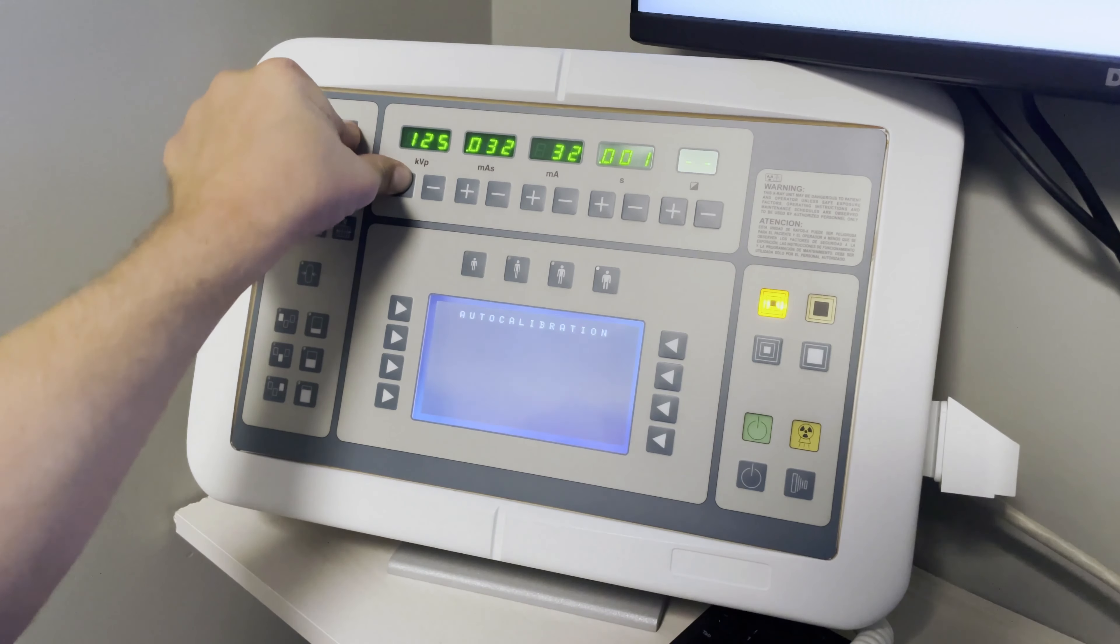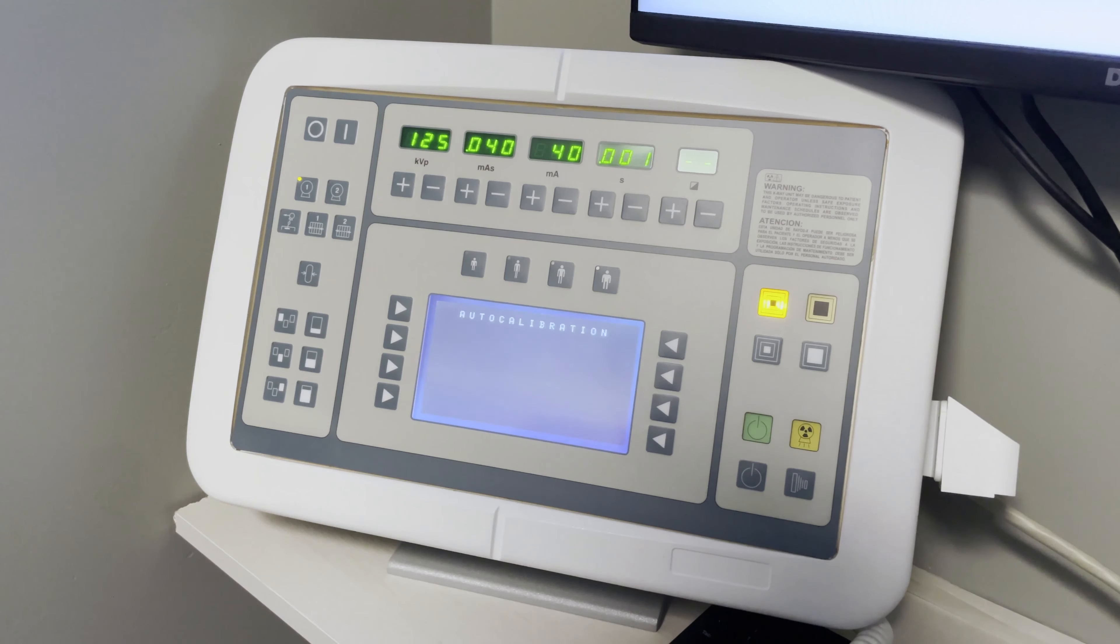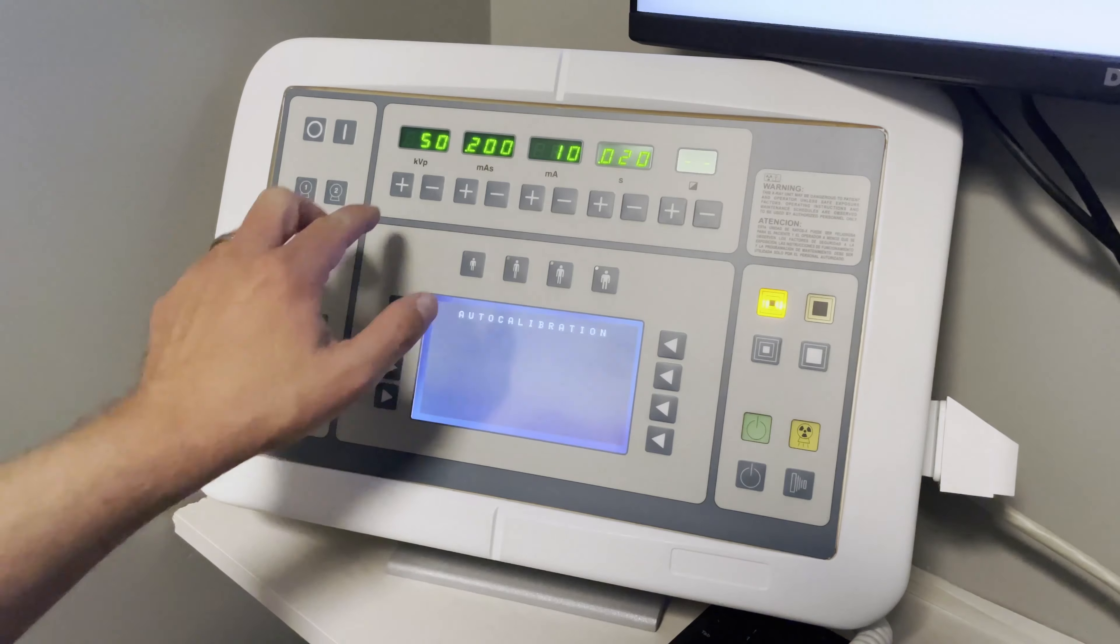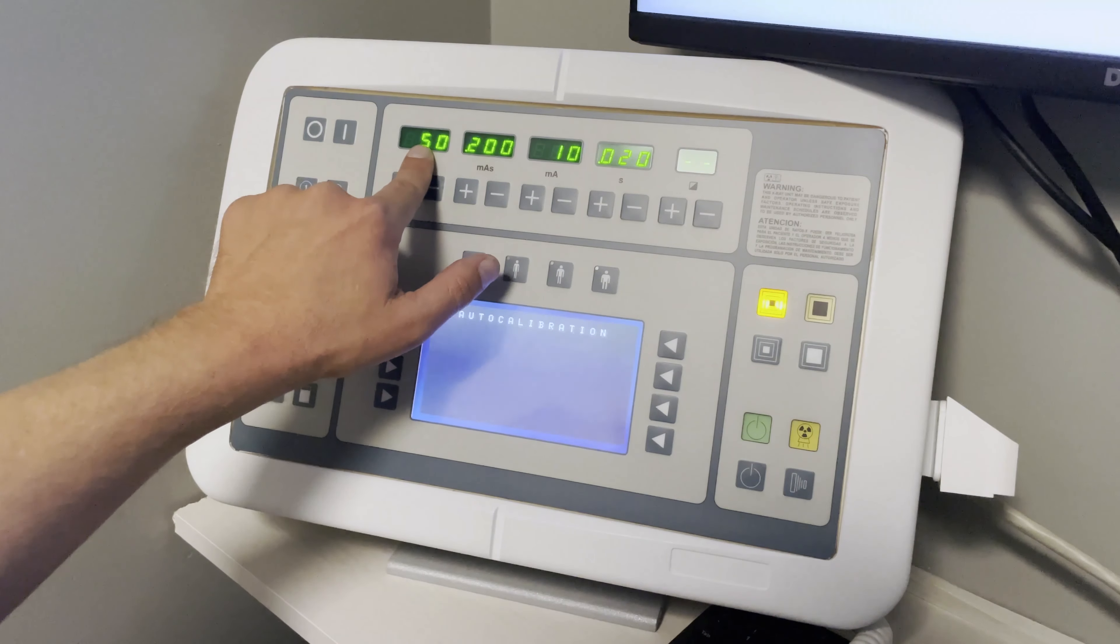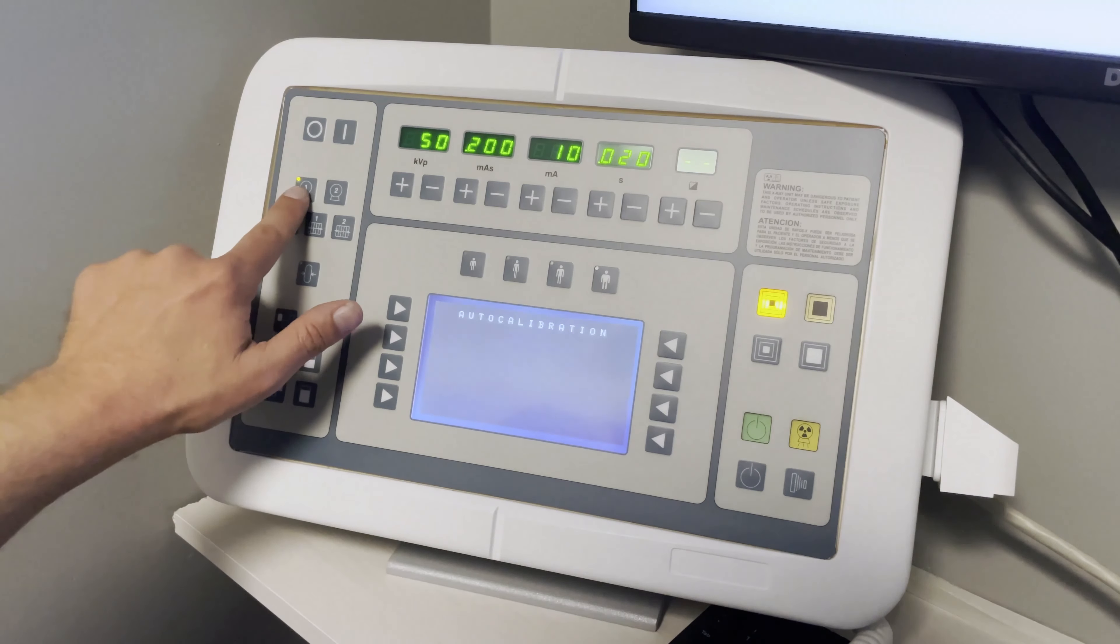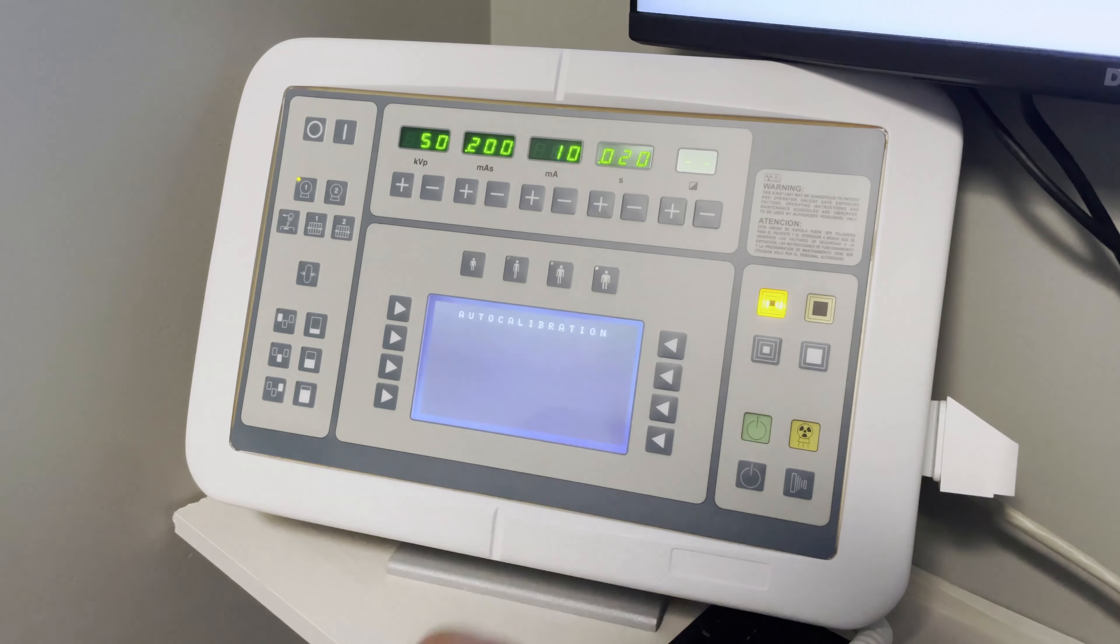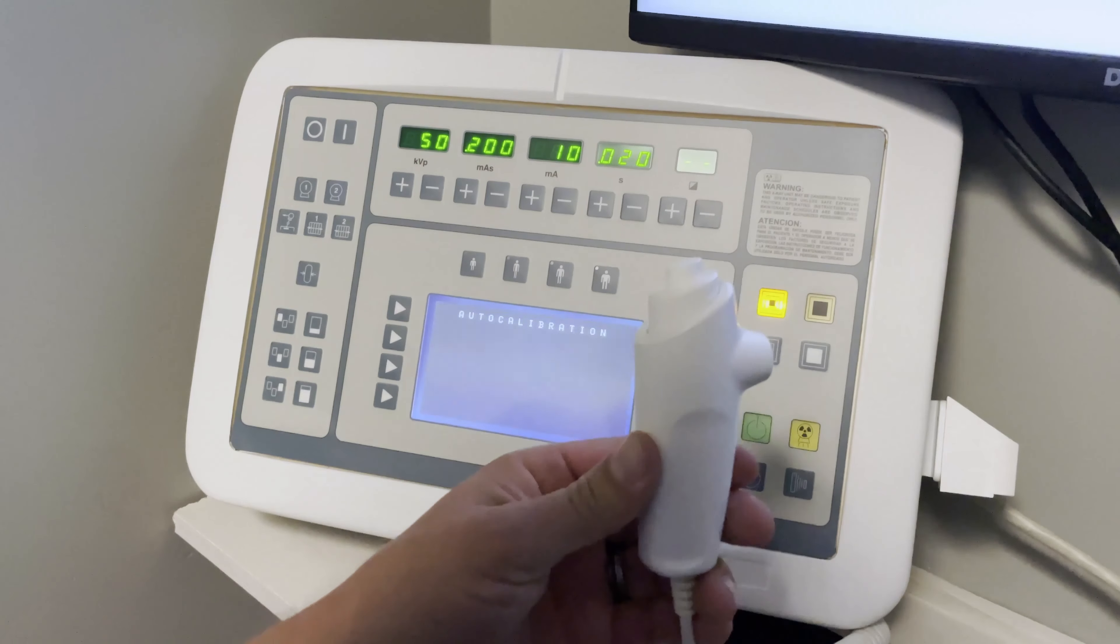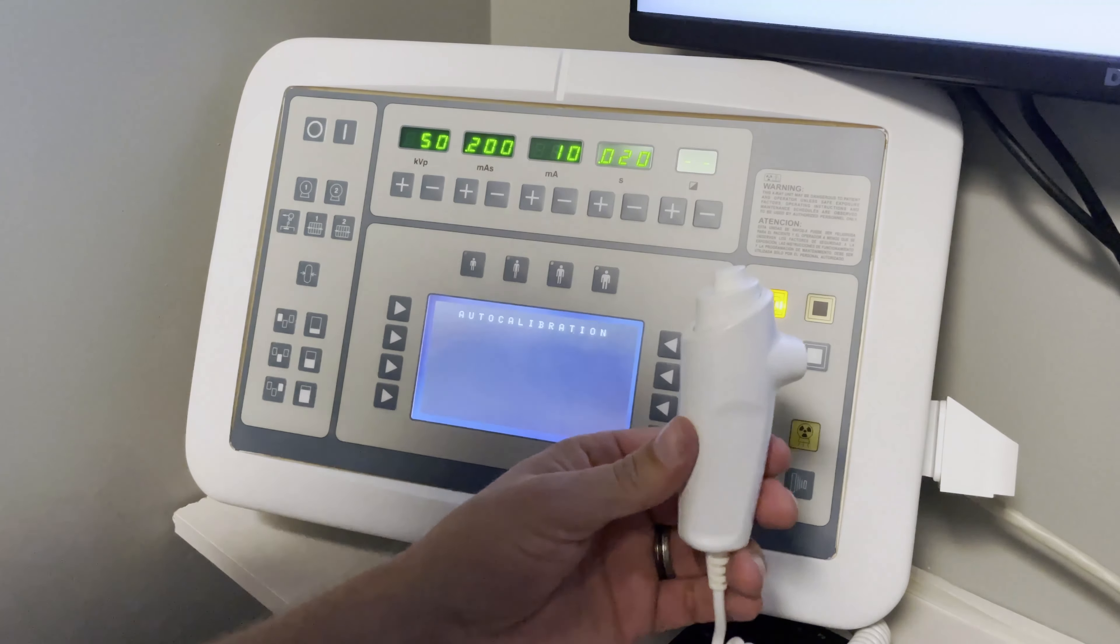Do it one more time. Now that I've hit it twice, you can see that the KVP is now at 50. The light is blinking and this is illuminated. So the next step that we want to do is we want to find the trigger switch, which is this button right here. And we're going to hold down on that and take a series of x-rays.